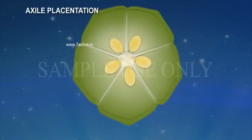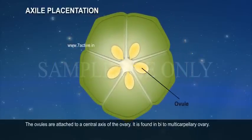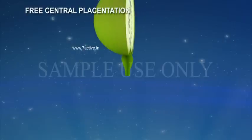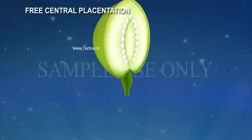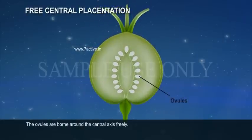Axial placentation: The ovules are attached to the central axis of the ovary. It is found in bi- to multicarpellary ovary. Example: Hibiscus.